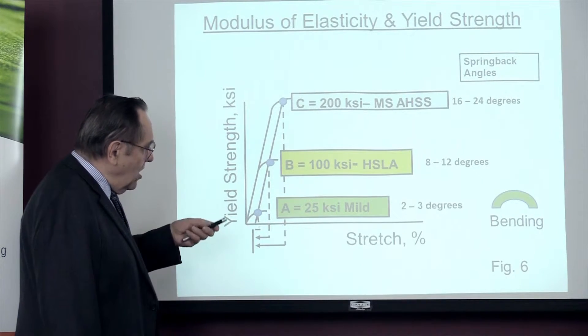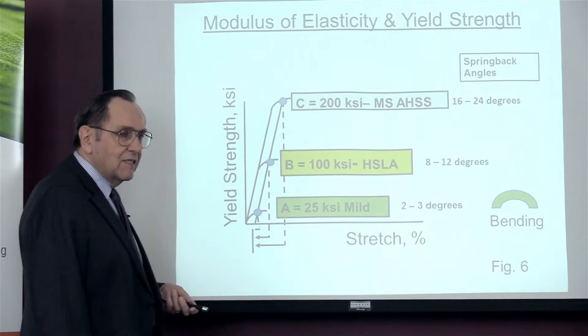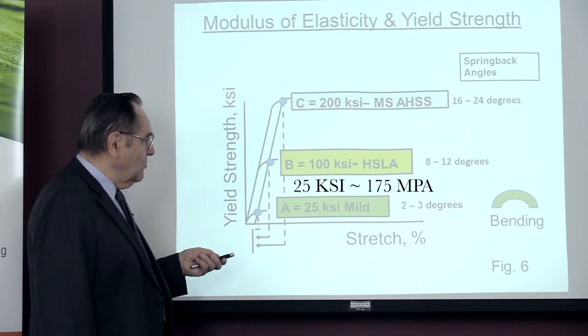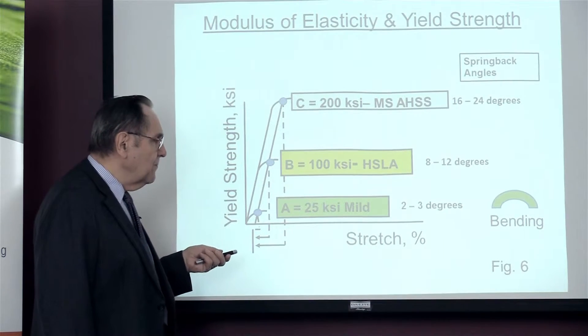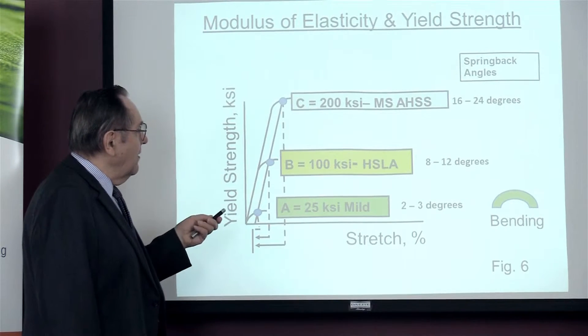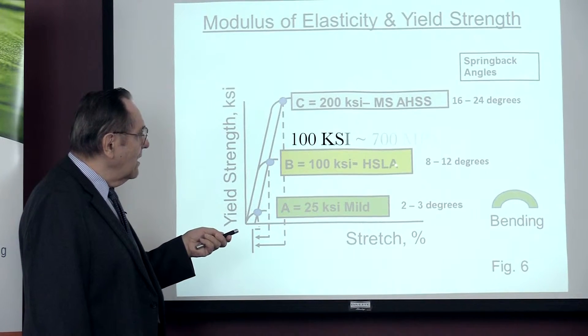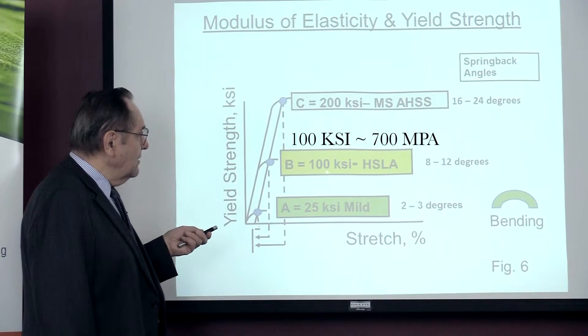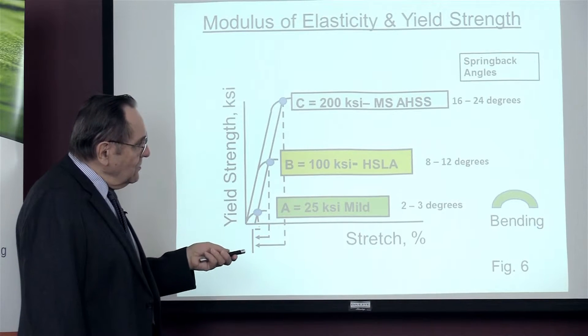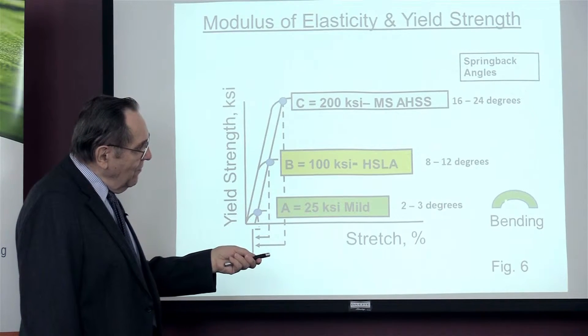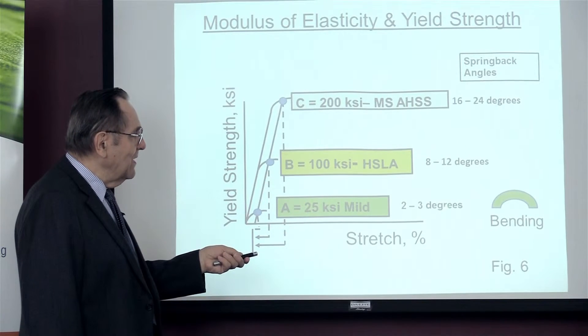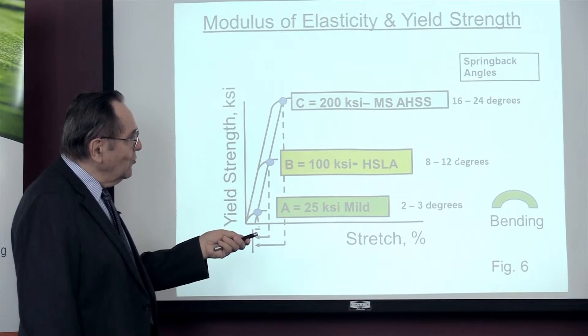Now, before the advanced high strength steels, we had 25 ksi, which in this case would be an 8 kdq steel, or a mild steel, which is the global definition. This is the high strength low alloy steels, 100 ksi. You have four times the amount of springback. So if you're making a bend over here, you had made two to three degrees of bend springback. Now you're talking 8 to 12.